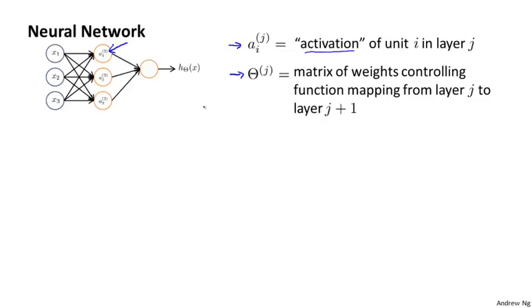In addition, our neural network is parameterized by these matrices theta superscript j, where theta j is going to be a matrix of weights controlling the function mapping from one layer, maybe the first layer to the second layer, or from the second layer to the third layer.